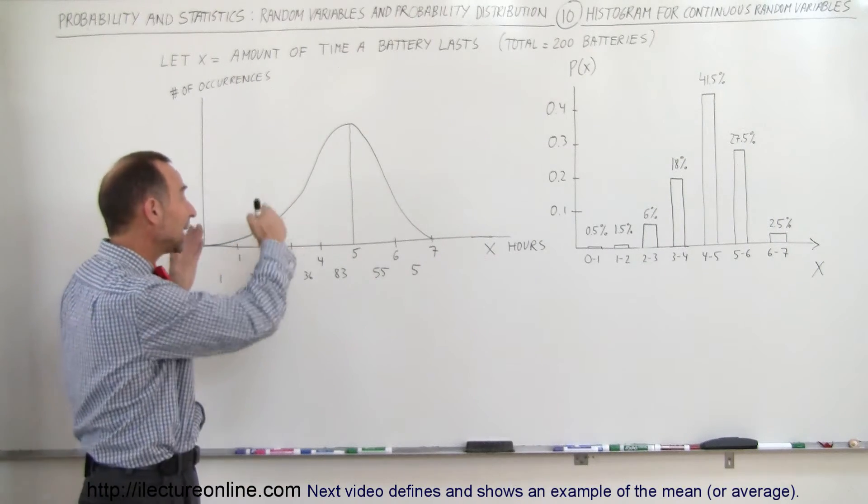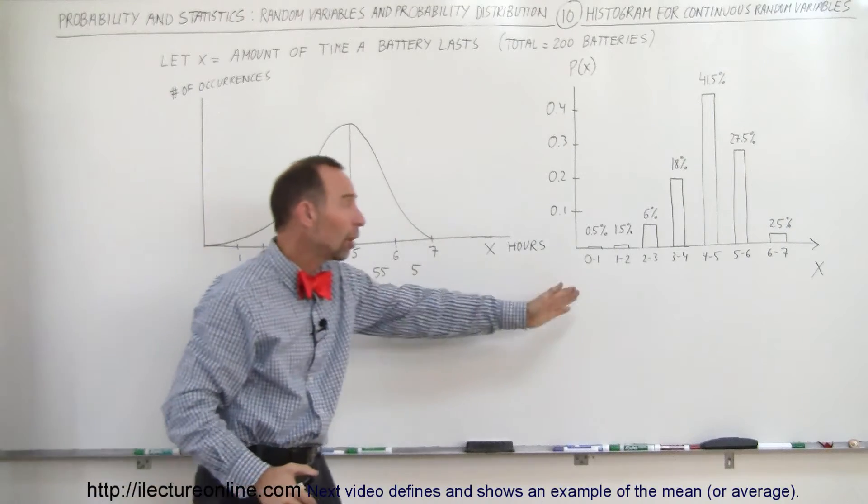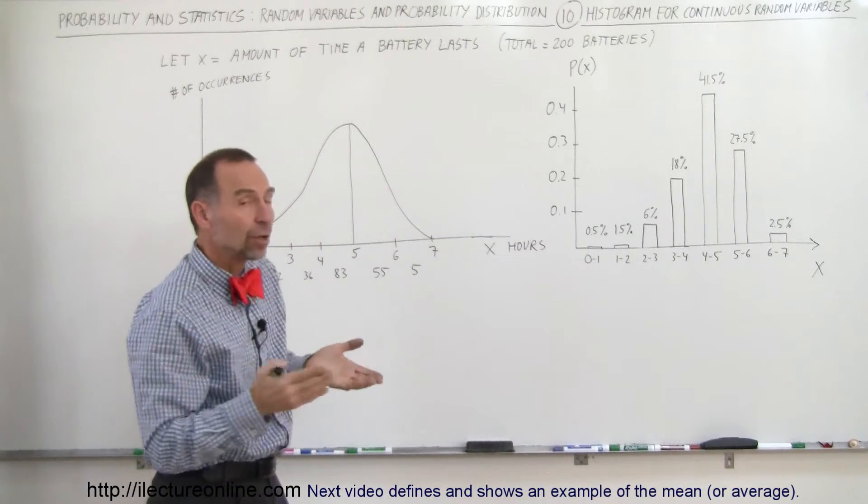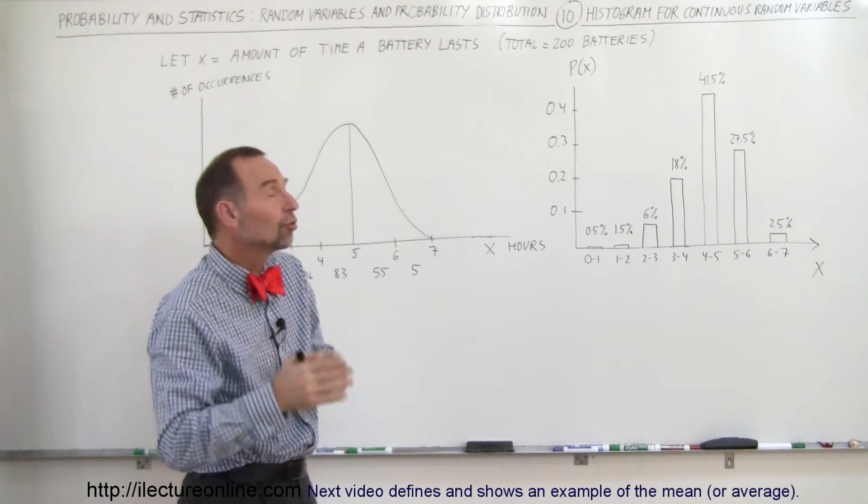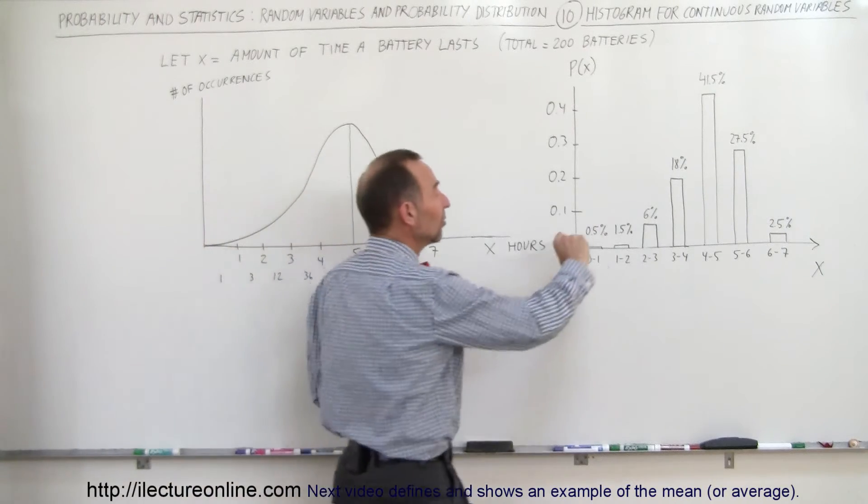So we can take that graph and put it into what we call a bar graph or histogram. Here we can also draw what we call a probability distribution graph or histogram.